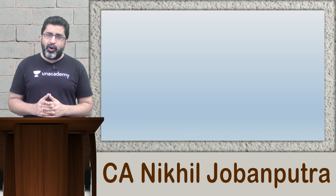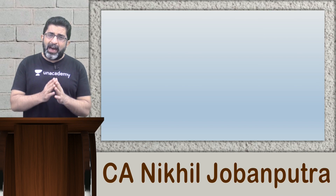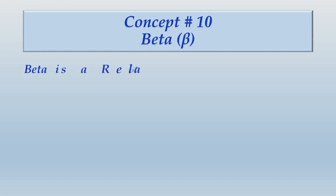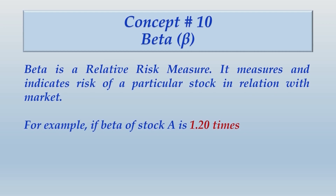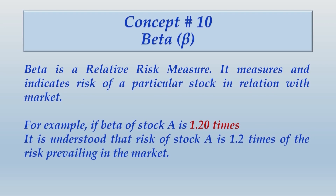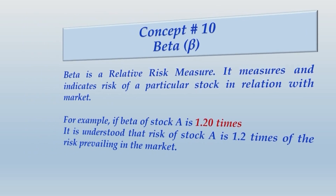Let us focus on the first concept: portfolio alpha, beta, and CAPM. The meaning of beta — beta is a relative risk measure. It measures and indicates the risk of a particular stock in relation to the market. For example, if beta of stock A is 1.2 times, it means the risk of stock A is 1.2 times the risk prevailing in the market.